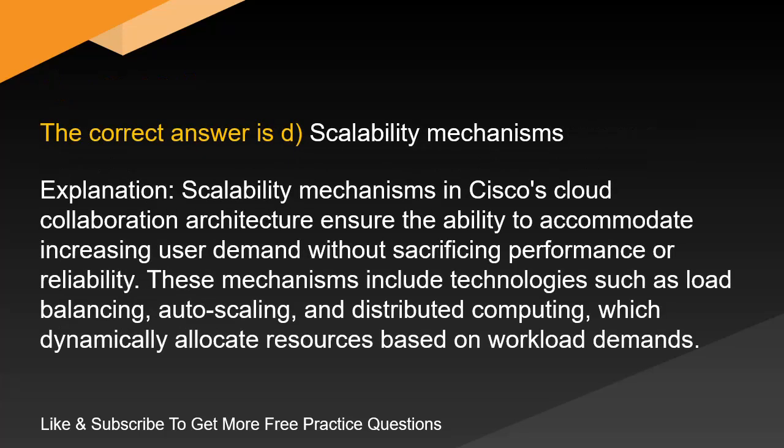The correct answer is D. Scalability Mechanisms. Scalability mechanisms in Cisco's cloud collaboration architecture ensure the ability to accommodate increasing user demand without sacrificing performance or reliability. These mechanisms include technologies such as load balancing, auto-scaling, and distributed computing, which dynamically allocate resources based on workload demands.